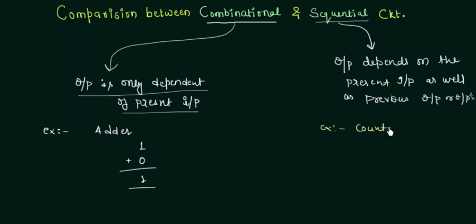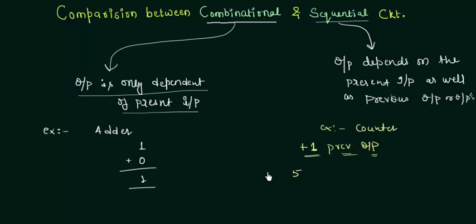A counter is a sequential circuit that we will cover at the end of this lecture series. In a counter — like in a stopwatch — it increments by 1 from the previous output. For example, if it is counting 5, the previous output was 4 and it added 1. Similarly, if the previous value was 3, it added 1 to get 4. So its operation requires information about the previous output, whereas combinational circuits don't.